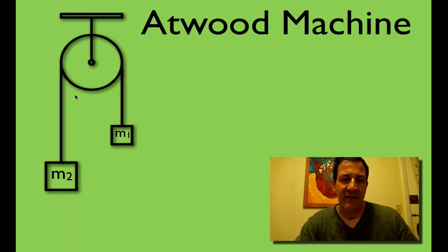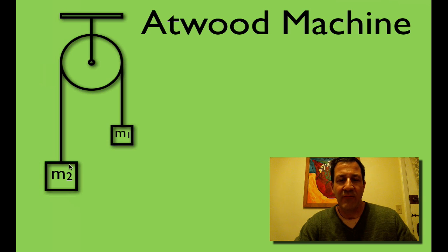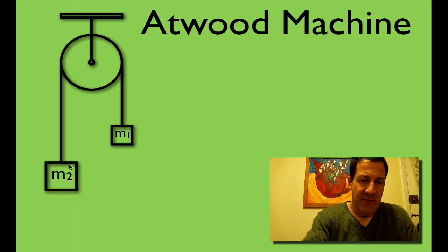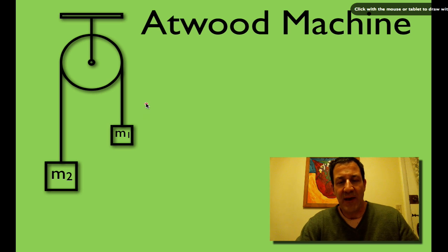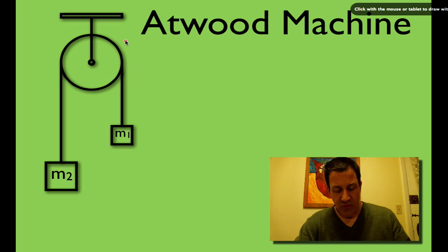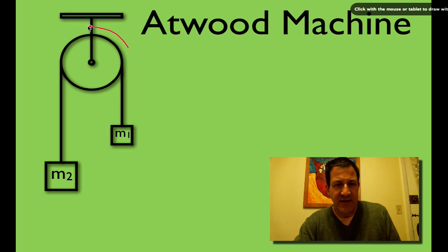He set up a system where we have a pulley and two masses. If we release the pulley, the masses are going to move — one mass will go down, one mass will go up — and they will accelerate with a constant acceleration. The acceleration of m2 and the acceleration of m1 will be the same. The pulley is going to rotate in this direction because m2 is greater.